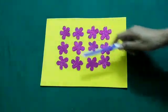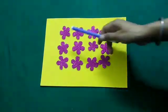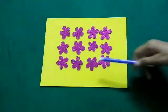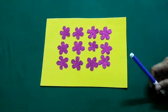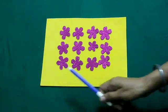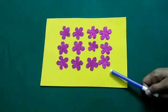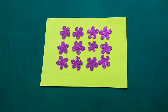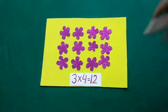Students, here we have some flowers. We have 1, 2, 3 rows of flowers and in each row we have 1, 2, 3, 4 flowers. So it means 3 multiplied by 4 is equal to 12.